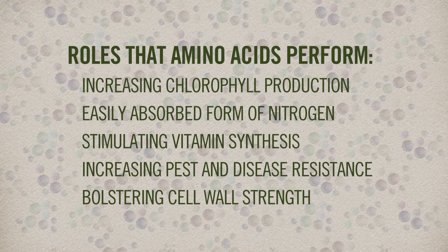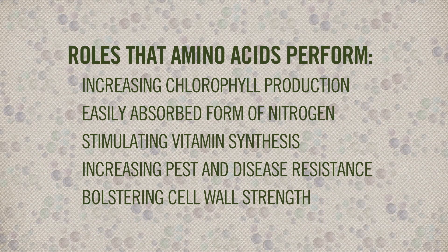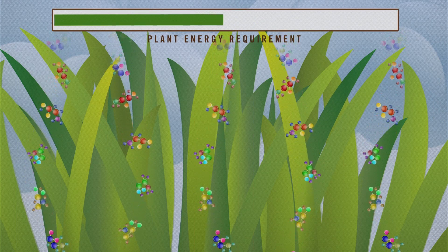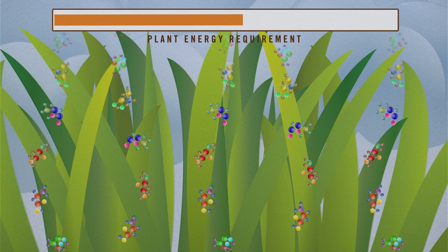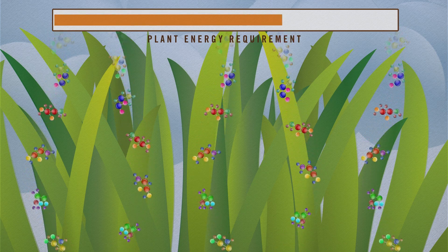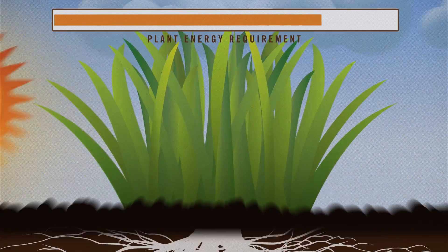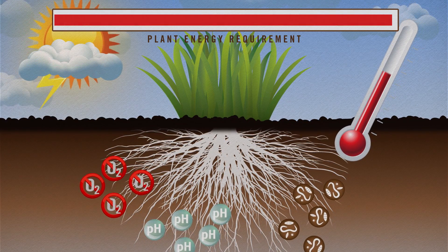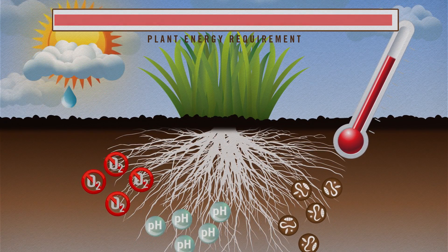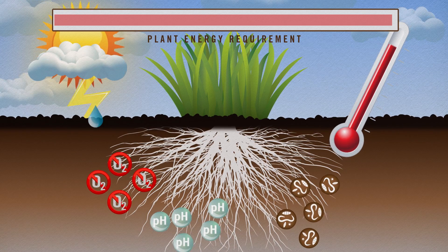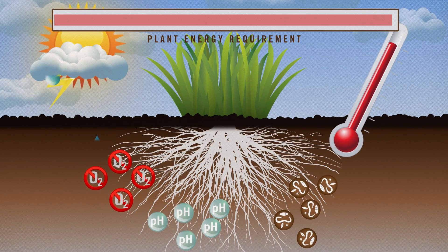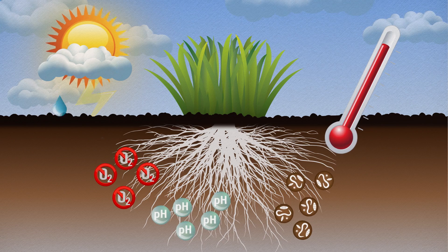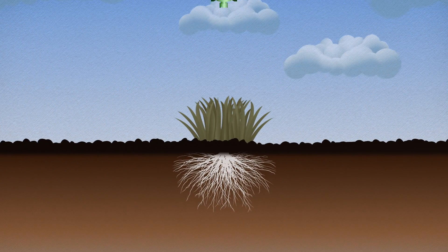Plants are able to produce these essential amino acids on their own, but doing so requires a lot of energy — energy that can be in short supply when the plant is also dealing with various environmental stresses. Short height of cut, drought, temperature extremes, compaction, pest attacks, and diseases all strain the turf's ability to produce the amino acids it requires for healthy growth and cellular strength.